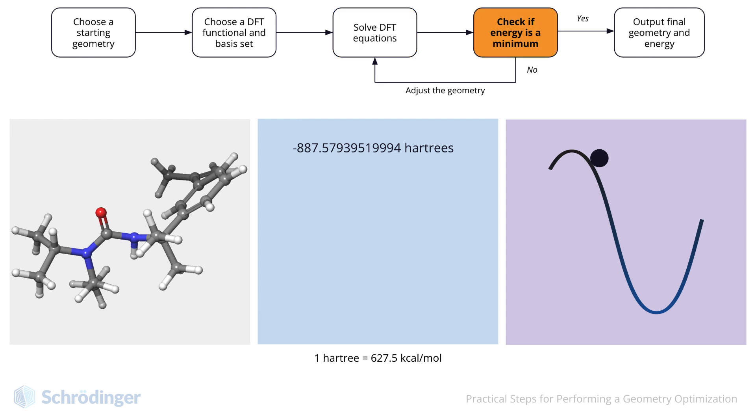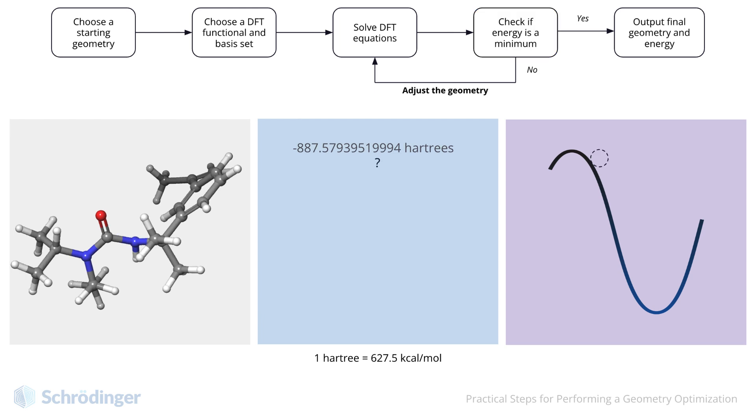Now, Jaguar will check if this energy is a minimum based on several criteria that we will cover a bit later in the next video. Unsurprisingly, this first geometry is not the minimum geometry, and so Jaguar will adjust the geometry, moving each atom in 3D space in search of a lower energy structure.